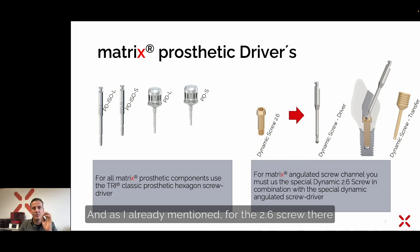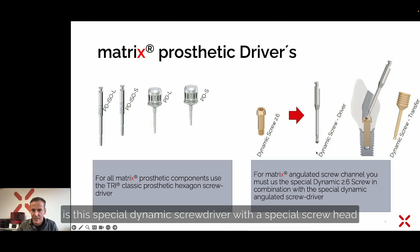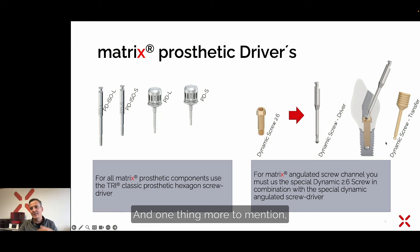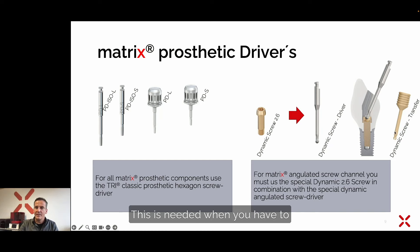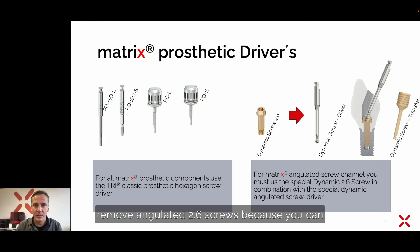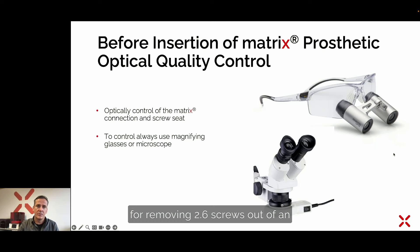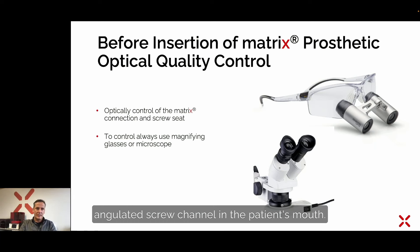For matrix prosthetic drivers, we have the classical hexagon drivers for all prosthetics. As already mentioned, for the 2.6 screw there is a special dynamic screwdriver with a special screw head, which you must use to insert the prosthetic screw. Also important: the dynamic screw transfer is needed when you have to remove a 2.6 angulated screw, because you can reach a frictional connection to this screw — that is what you use for removing 2.6 screws from an angulated screw channel in the patient's mouth.